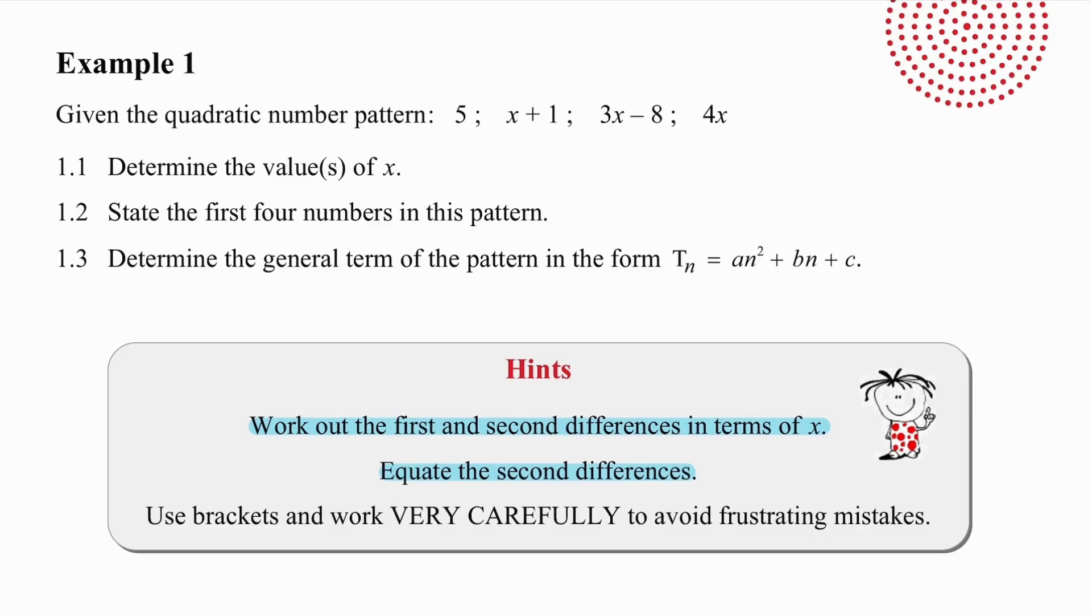When you are working with an example like example 1, be very careful, more haste, less speed, because if you make any mistakes with the negative signs, you are going to end up with a very complicated set of mistakes, which are difficult then to go back and fix. So, more haste, less speed. Pause the video.